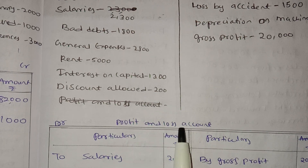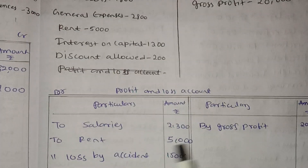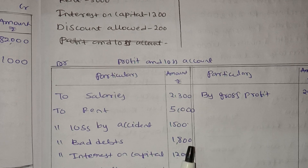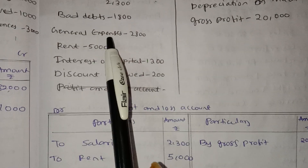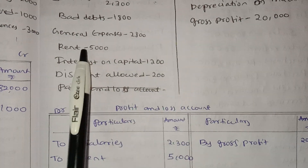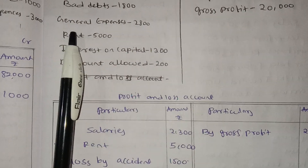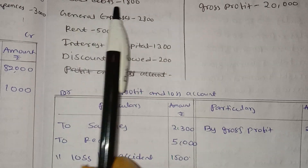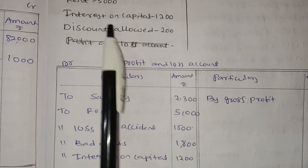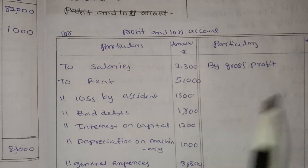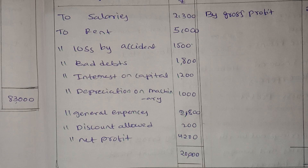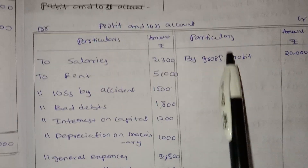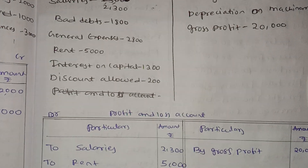Next is rent — rent is 2,800. Salary is an amount we have to spend on the profit. Next is bad debts. Rent is 5,000. Next is interest on capital — 12,000. Next is discount allowed. Next is loss by accident, loss by depreciation of machinery.